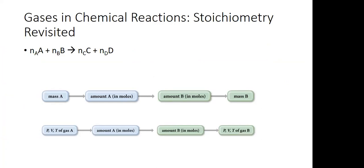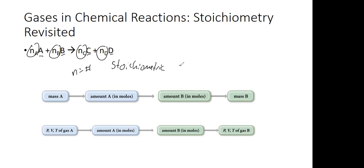Now what we're going to get into is stoichiometry again. Test two was actually a lot of stoichiometry, and stoichiometry is not going away. So if you didn't quite get it for aqueous systems, we're going to give another go at it with gas systems. I just have a generic chemical equation — molecule A plus molecule B makes molecule C plus molecule D.